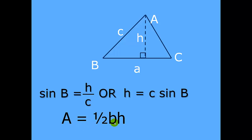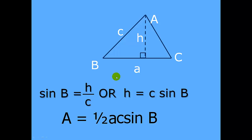The area is one-half times base times height. Substituting in, the base is side A and the height is C sine B. So the area of an oblique triangle is equal to one-half times the two included sides times the sine of the angle between them.